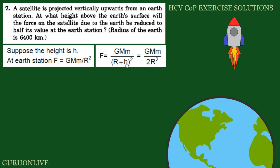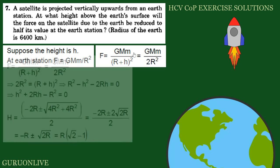So, the value is GMm by R plus H whole square. Now, the force is GMm by 2R². GMm by R² by 2 is GMm by 2R². So, we equate the two.